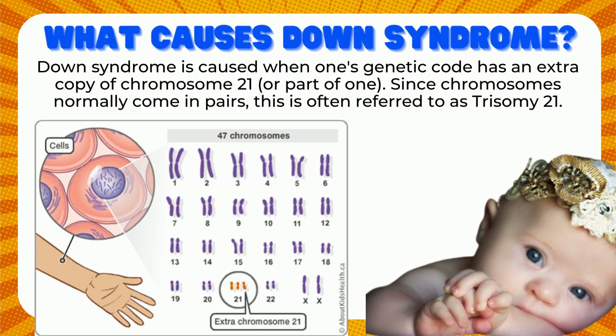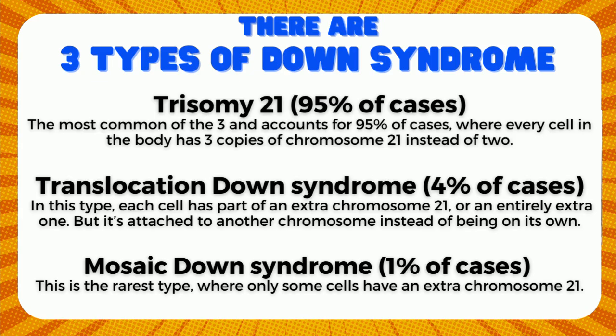So let's move into the video and see some of these cuties I have for y'all. Here are the three types of Down syndrome. The first one is trisomy 21, which is the most common one — 95% of the cases are trisomy 21. This is basically where the body has three copies of chromosome 21 instead of two.